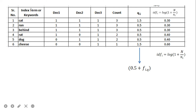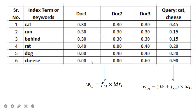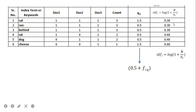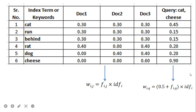Next we multiply the IDF values by the document vectors and the query vector. Whatever IDF results we obtained are multiplied across all document term values as well as the query term values. After this multiplication we obtain the weighted w_ij values for each document and the weighted w_iq values for the query.